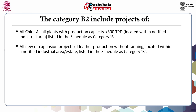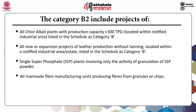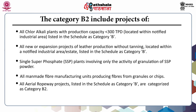Expansion projects of leather production without tanning and located within a notified industrial area, listed in the schedule as Category B, are treated as B2 category. Single superphosphate plants involving only the activity of granulation of SSP powder are also in Category B2. All manmade fiber manufacturing units producing fibers from granules or chips, and all aerial ropeway projects listed in the schedule as Category B, are categorized as Category B2. Mining of minor minerals with lease area less than 25 hectares are also categorized as Category B2 projects.